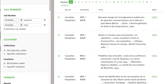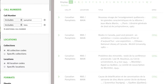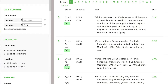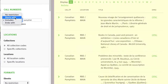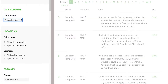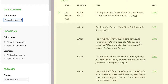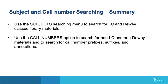We can search for other call number strings as well — in this case, for the word folio. We can remove these string searches as well. To summarize, use the subject searching menu to search for LC and Dewey classified library materials, and use the call numbers option to search for non-LC and non-Dewey materials, and to search for call number prefixes, suffixes, and annotations.